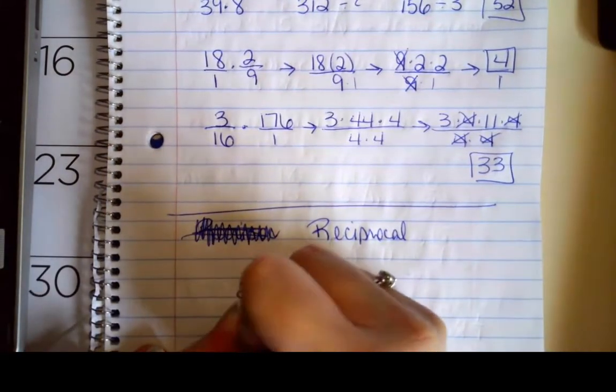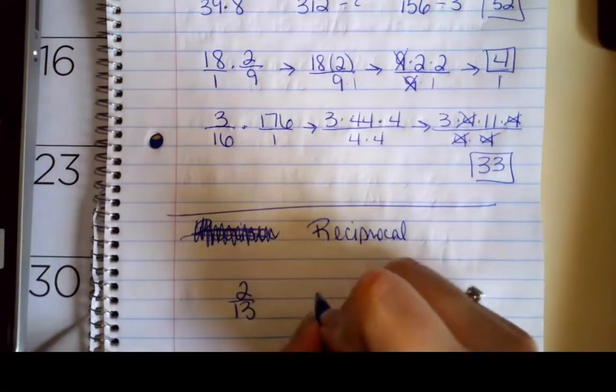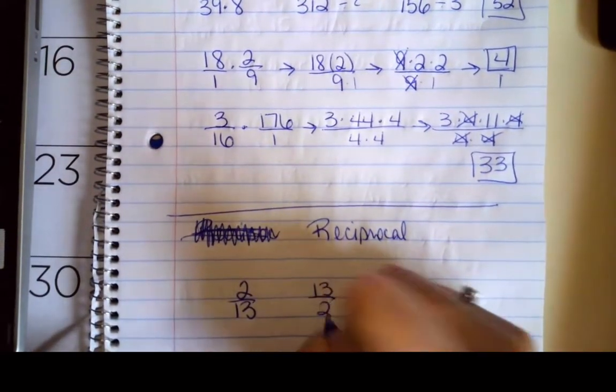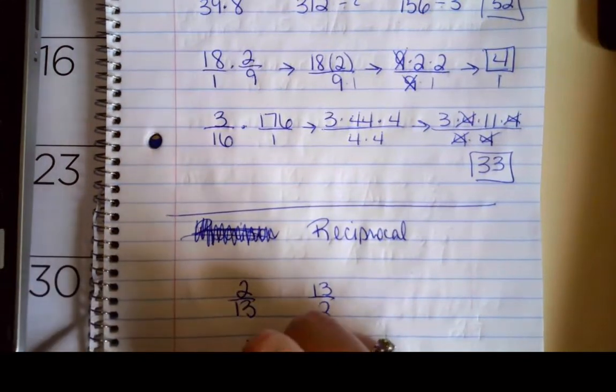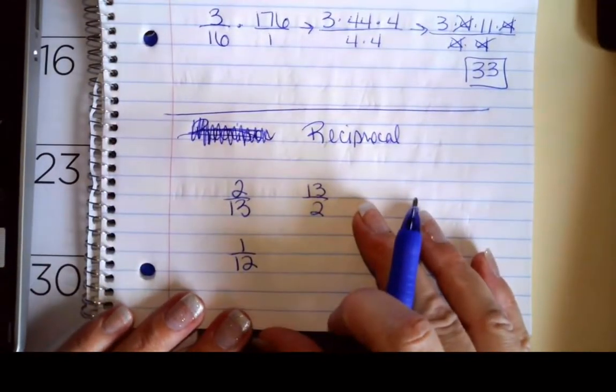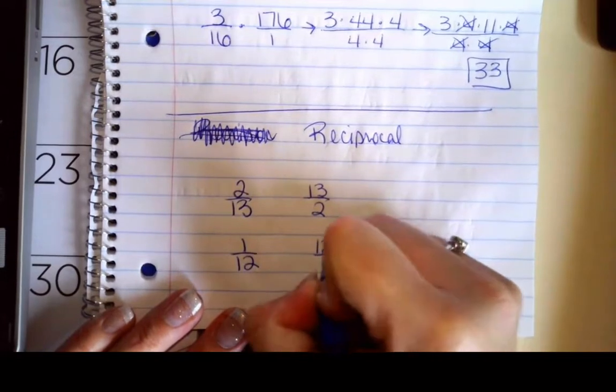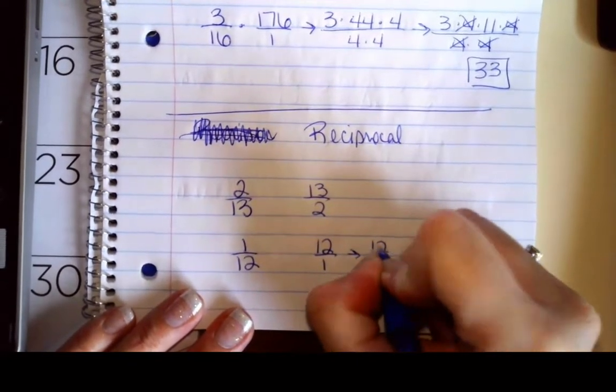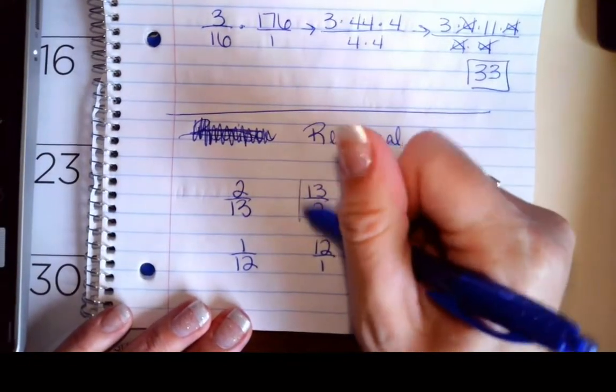So just to give you a couple of examples, if I have the proper fraction of 2/13, I would like to know what its reciprocal is. So its reciprocal literally means that we just flip it and we get 13/2. So what about 1/12? What is its reciprocal? The reciprocal of 1/12 means I flip it, and so its reciprocal is 12 over 1, and I'm too lazy to write the over 1, so it just becomes 12.